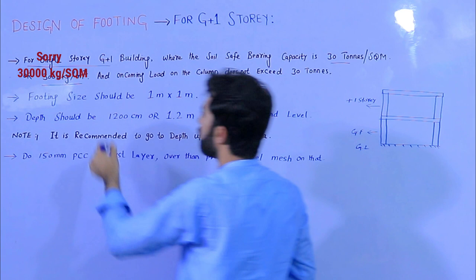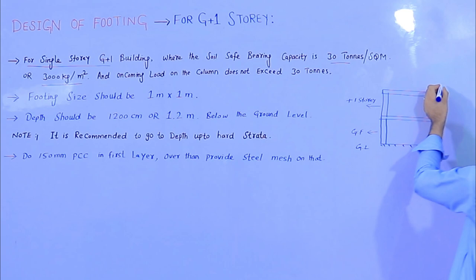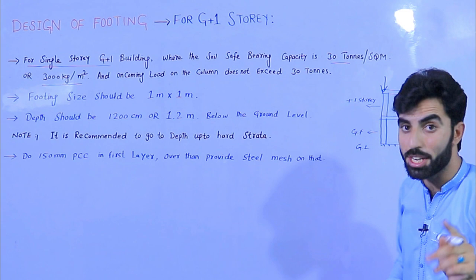This is the safe bearing capacity of the site. The incoming load on the column should not exceed 30 tons per square meter — it should not be more than that. Remember this point.